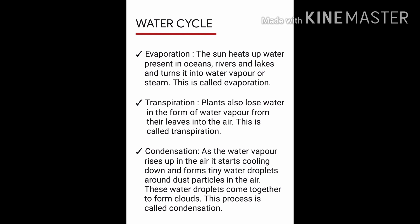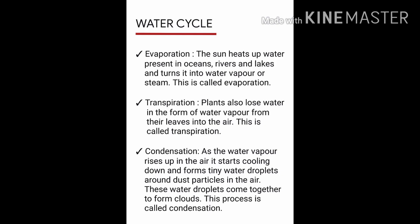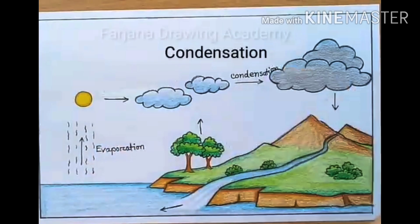Plants also lose water in the form of water vapor from their leaves into the air. This is called transpiration. As the water vapor rises up in the air, it starts cooling down and forms tiny water droplets around dust particles in the air. These water droplets come together to form clouds. This process is called condensation.